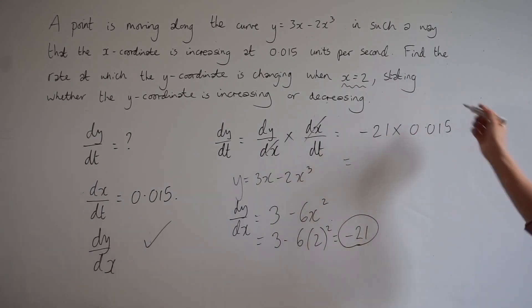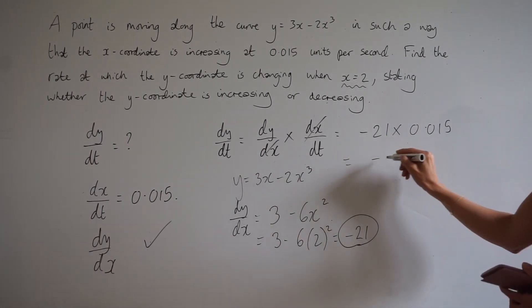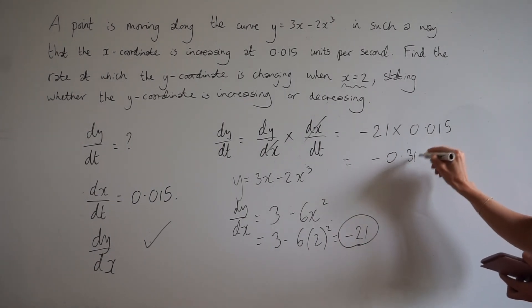When you multiply those numbers together, you get minus 0.315.